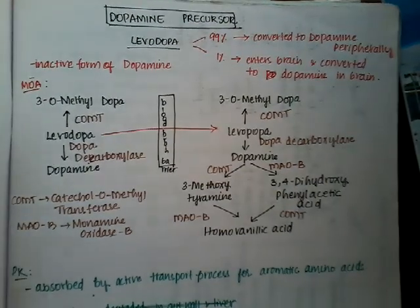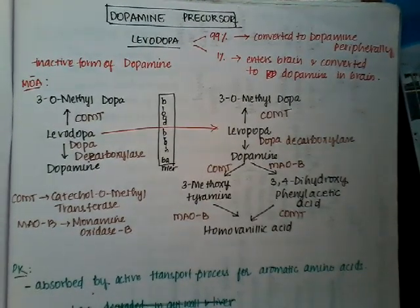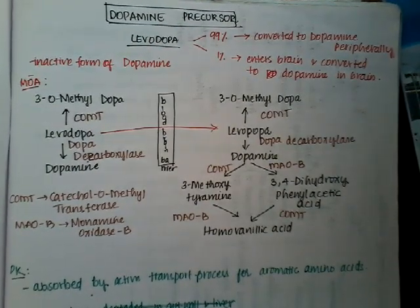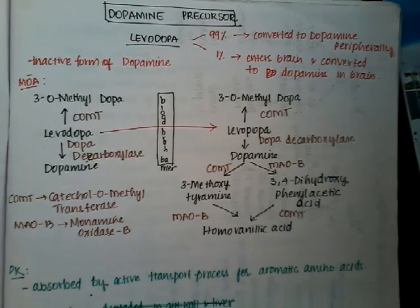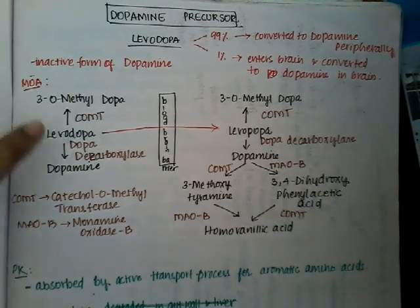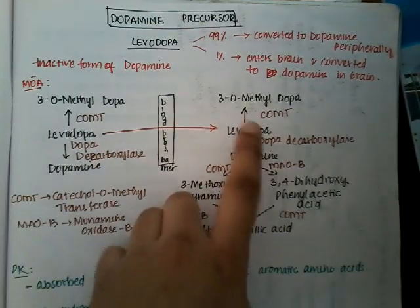This whole mechanism has been explained in the previous class — please visit the previous class for details. Levodopa crosses the blood-brain barrier and gets converted to dopamine, but it also gets peripherally degraded by dopa decarboxylase to dopamine, which is the cause of many side effects.